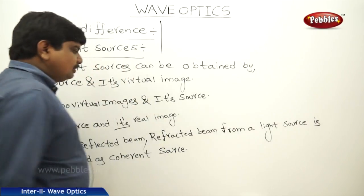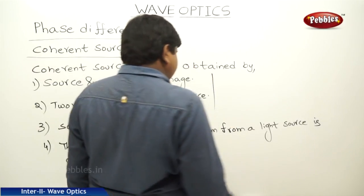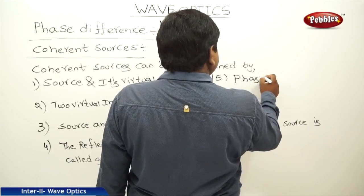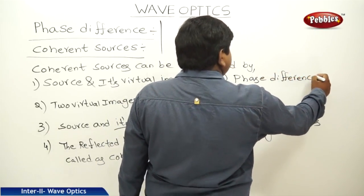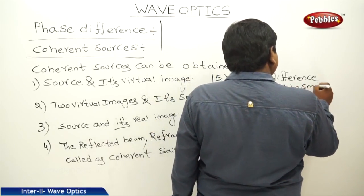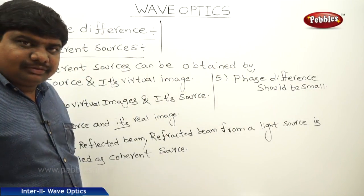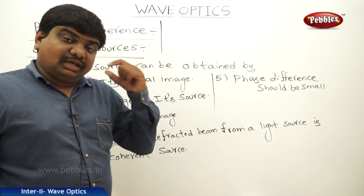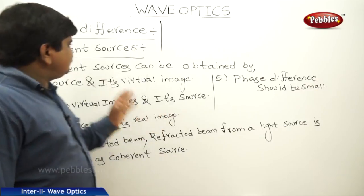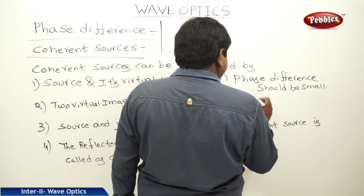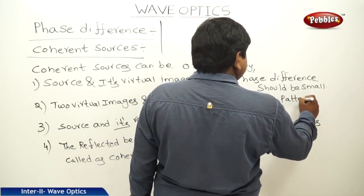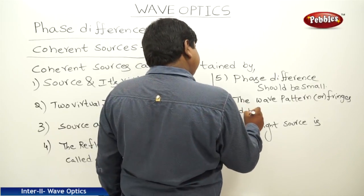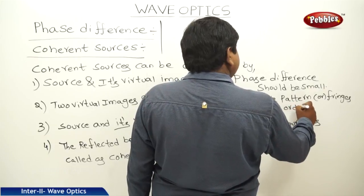These are called coherent sources. The phase difference between the two light sources should be very small. Additionally, the wave pattern or fringes should be in the order of wavelength — long wavelength means a long gap between fringes, short wavelength means a short gap. Light sources that can arrange fringes in that order are said to be coherent sources.